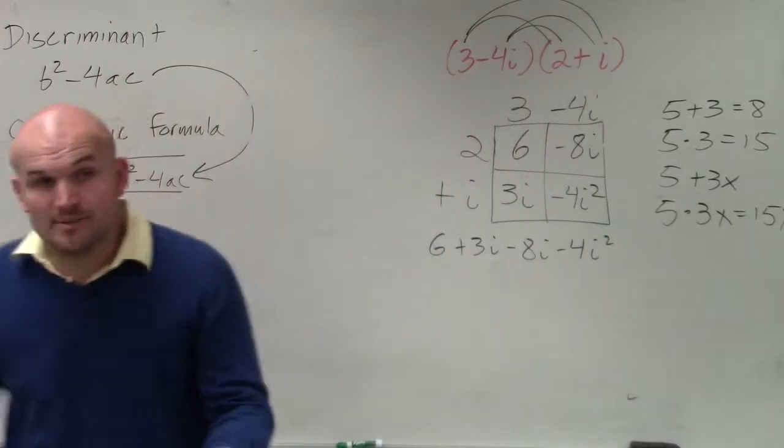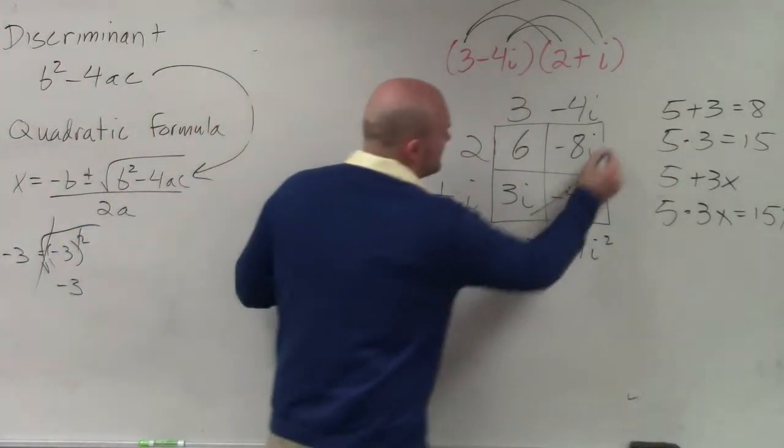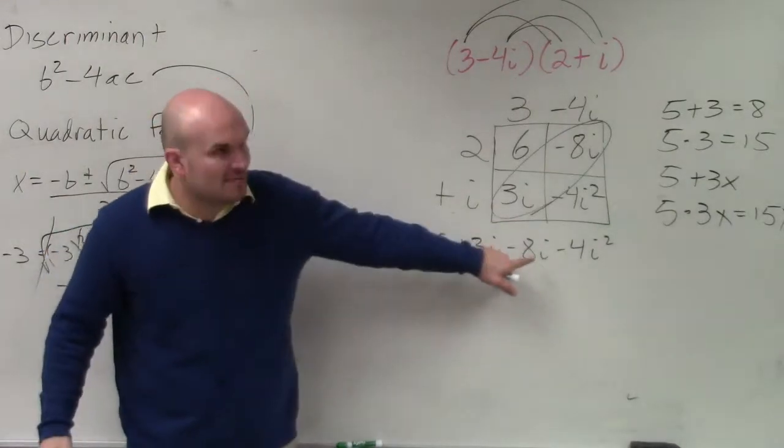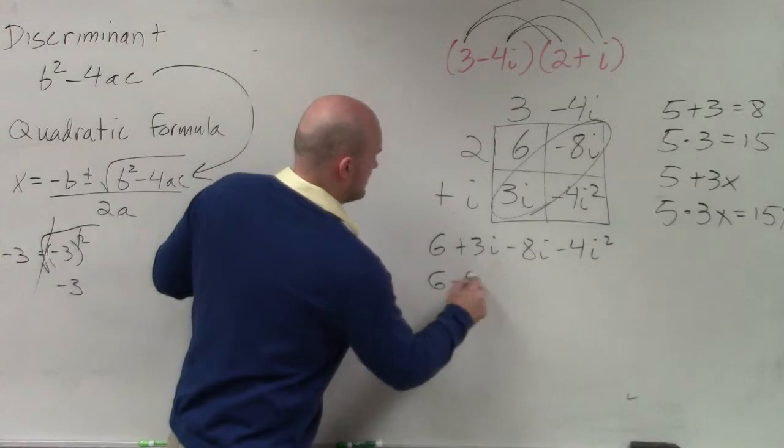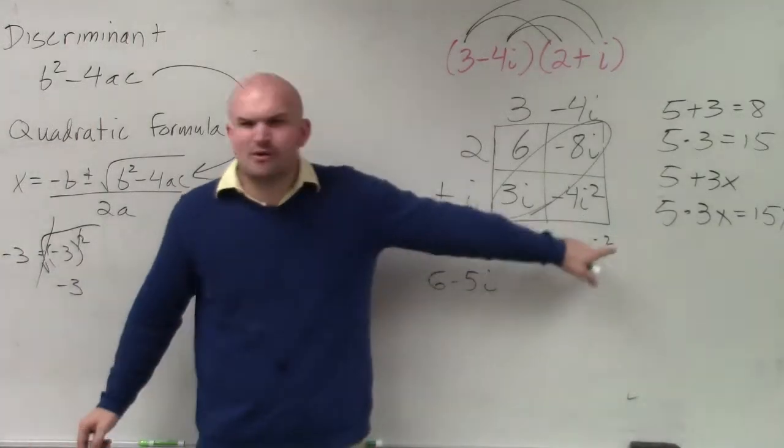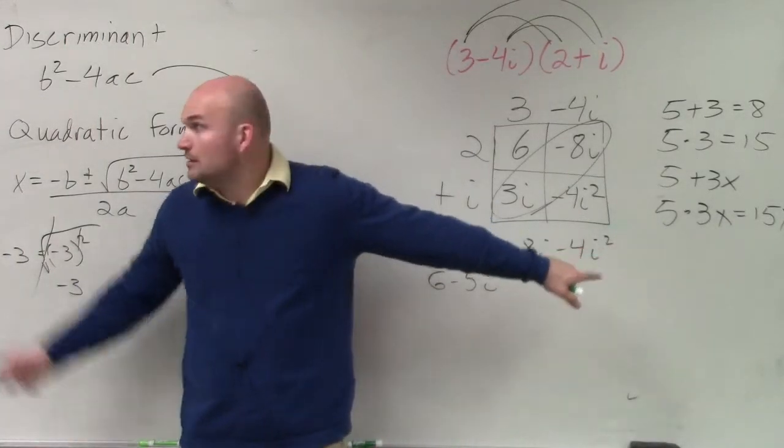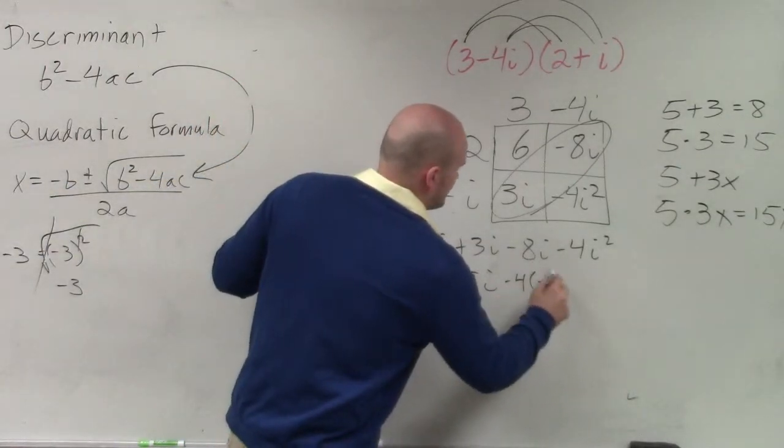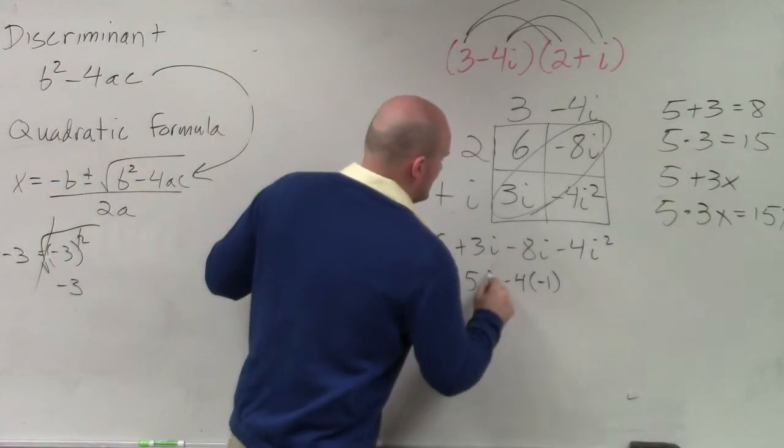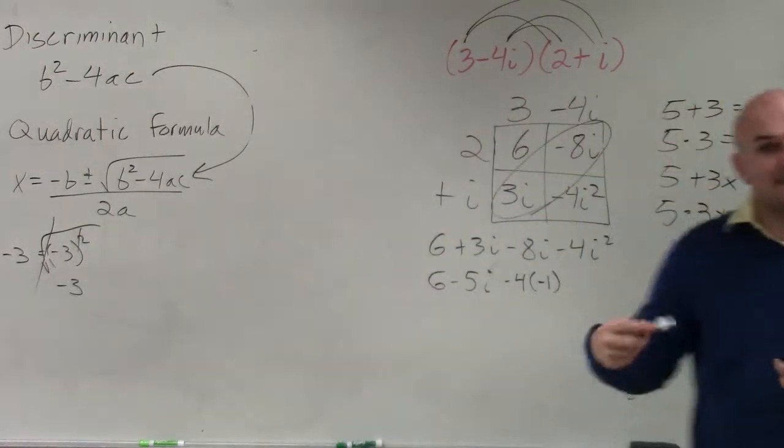Now, what's important about this is you guys could have combined this first of all. So what's 3i minus 8i? Negative 5i. Then, what does i squared represent? Negative 1.